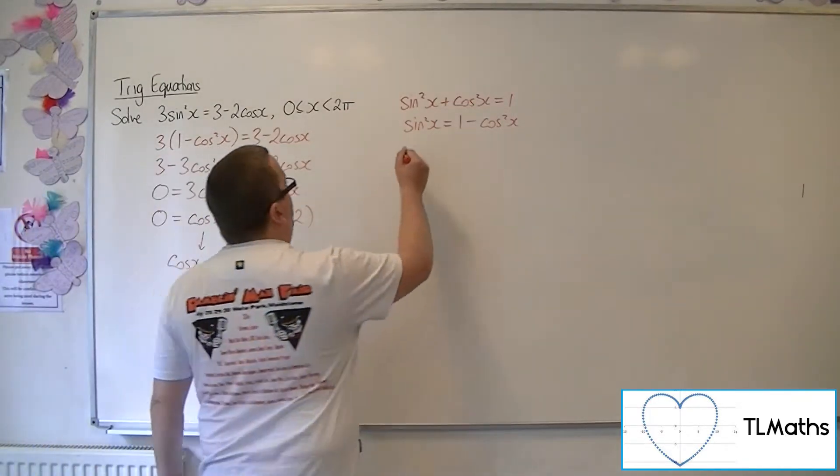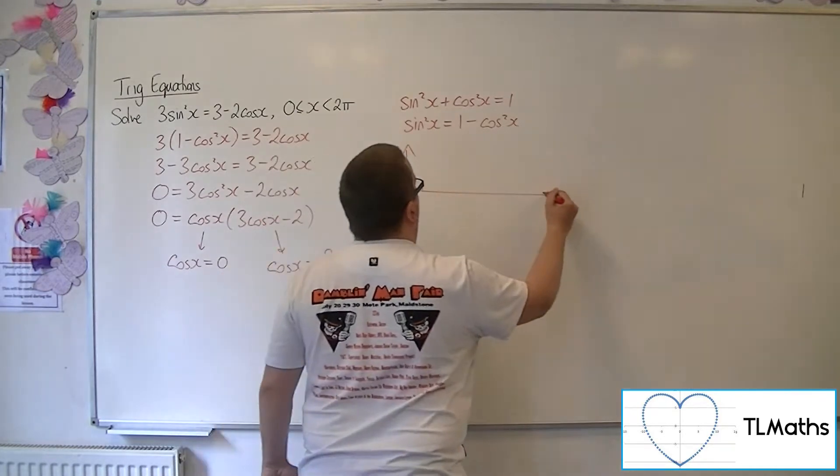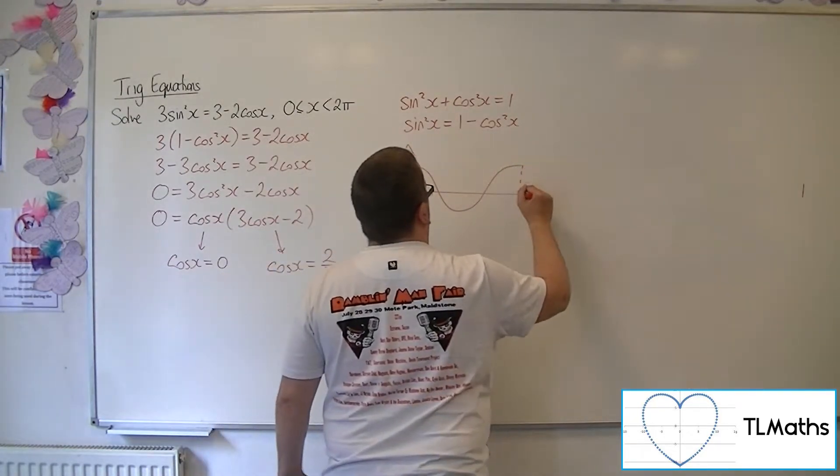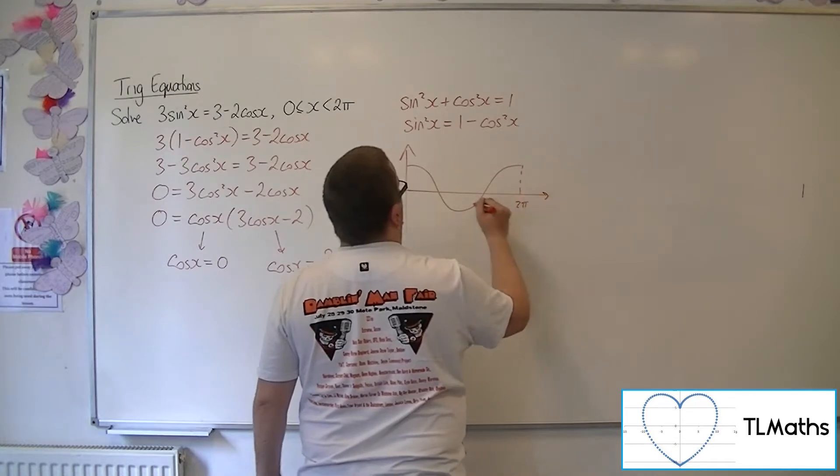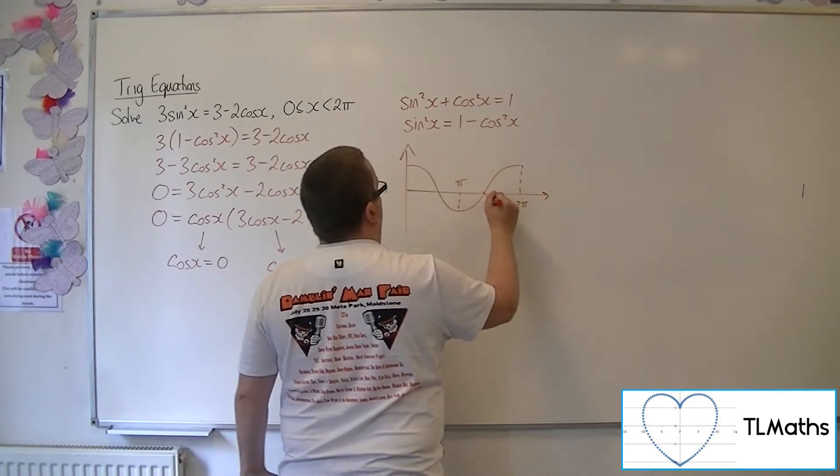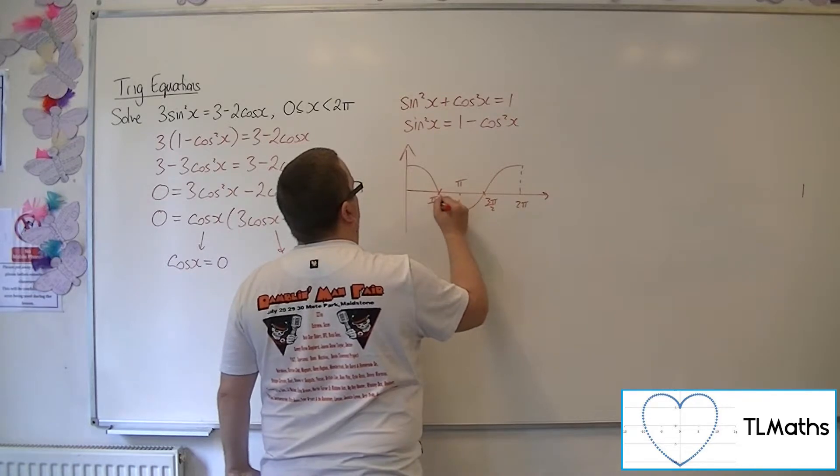So if we sketch cosine for 0 and 2 pi, there's pi, there's 3 pi over 2, there's pi over 2.